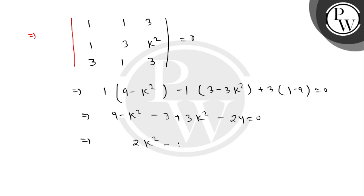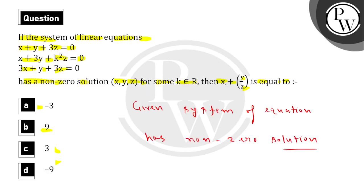This is equal to zero. This implies k squared value is 9. So we get k value is plus or minus 3. Now to find x plus y upon z. Now the system of equations: equation 1 is x plus y plus 3z equal to 0. Second equation x plus 3y plus k squared z equal to 0.